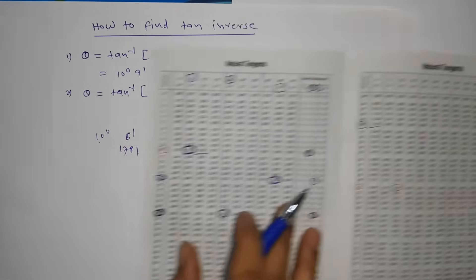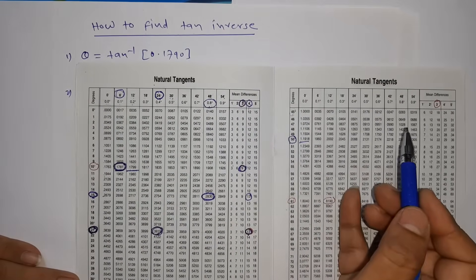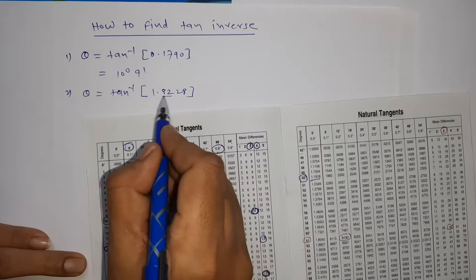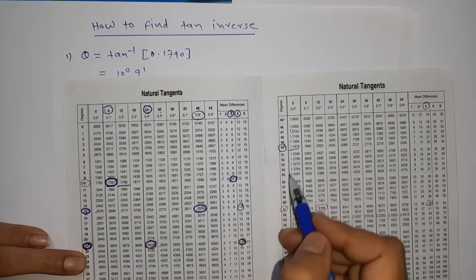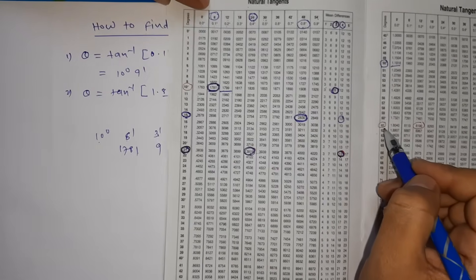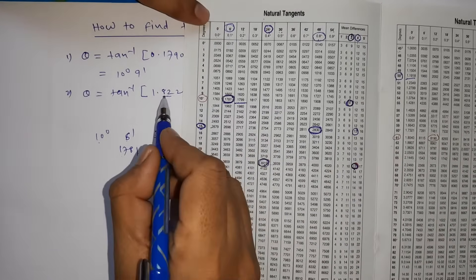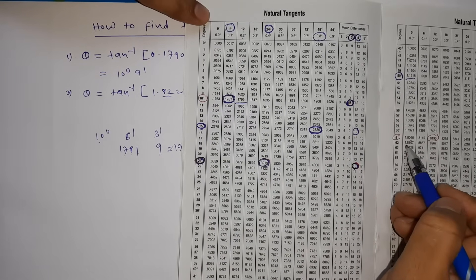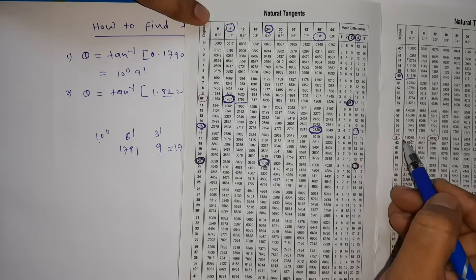We'll see one more example: 1.8228. Remember, students — below tan 45° we have 0-point values, and above 45° we have 1-point values. Here it is 1.8228, so definitely more than 45°. Looking for 1.81 — I see 1.8040 in 61 degrees. So I'm getting 1.8040 in 61 degrees, and my number is 1.8228.